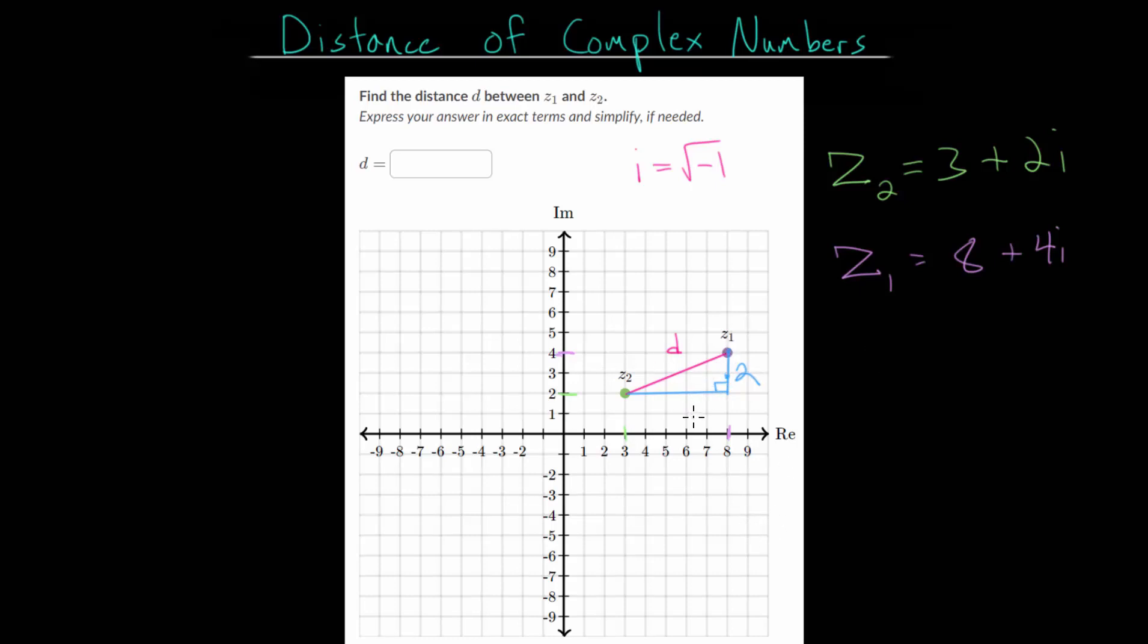For the real part, we can follow the same process. We can notice that it has a real part of 8 all the way out here, and a real part of 3 here. So if we find their difference, 8 minus 3, we can figure out this length is 5. Or again, if you count them 1, 2, 3, 4, 5, you will get the same value.